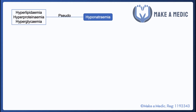Pseudohyponatremia can be distinguished from true hyponatremia based on serum osmolality, since sodium is one of the main salts in the body and serum osmolality is heavily dependent on sodium concentration. A normal serum osmolality with a low sodium is suggestive of pseudohyponatremia, occurring in cases of high lipids and high proteins. A high serum osmolality with a low sodium is also suggestive of pseudohyponatremia, more likely due to hyperglycemia. In true hyponatremia, the serum osmolality should be low.